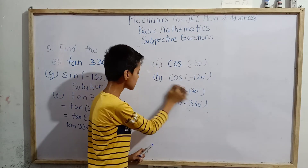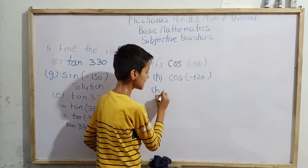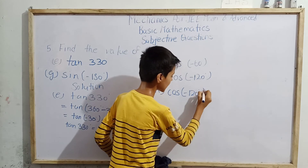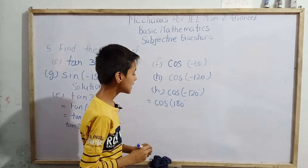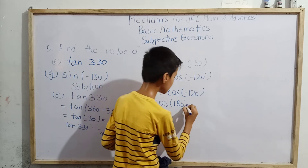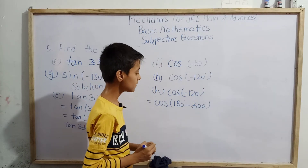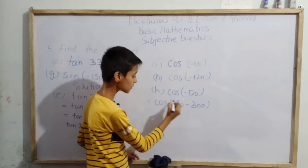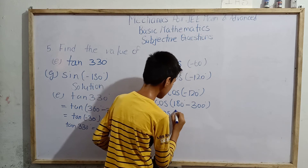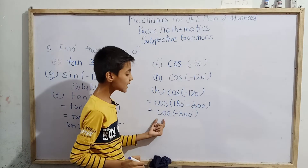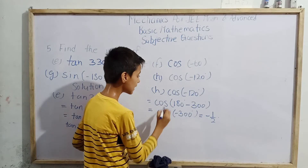Now the last part, h: cos(-120°). Can it be written as cos(180° + (-300°))? Yes, because 180° + (-300°) = -120°. Since cos 180° = -1... multiplying through, this equals cos(-300°). So cos(-120°) = cos(-300°).